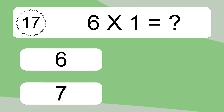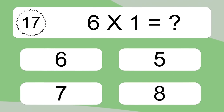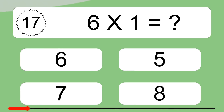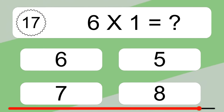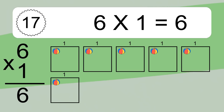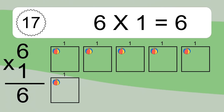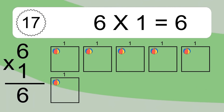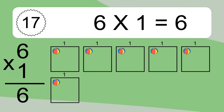6 times 1 equals what? We have 6 boxes and each box has 1 colorful ball inside. If you count all the balls in all the boxes together, you will have 6 times 1 balls. This equals 6 balls.